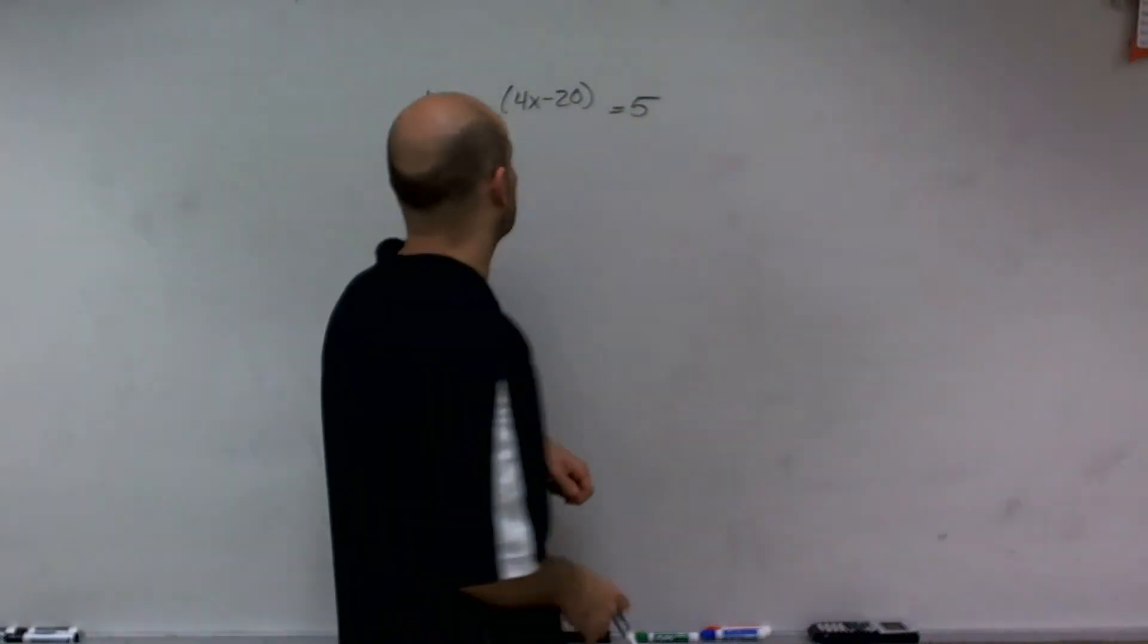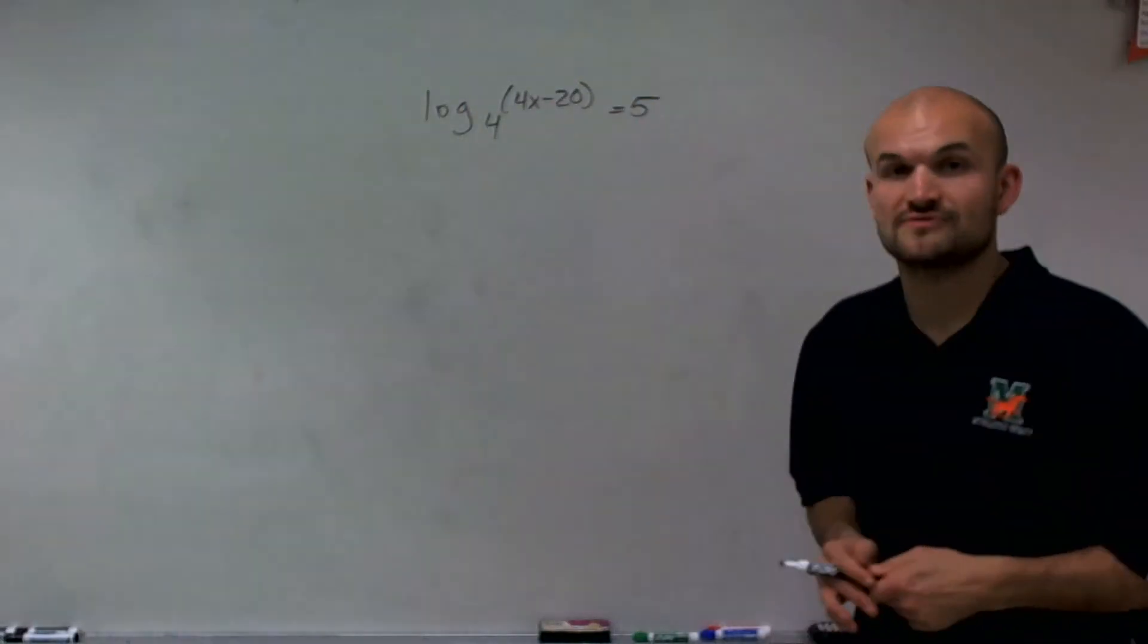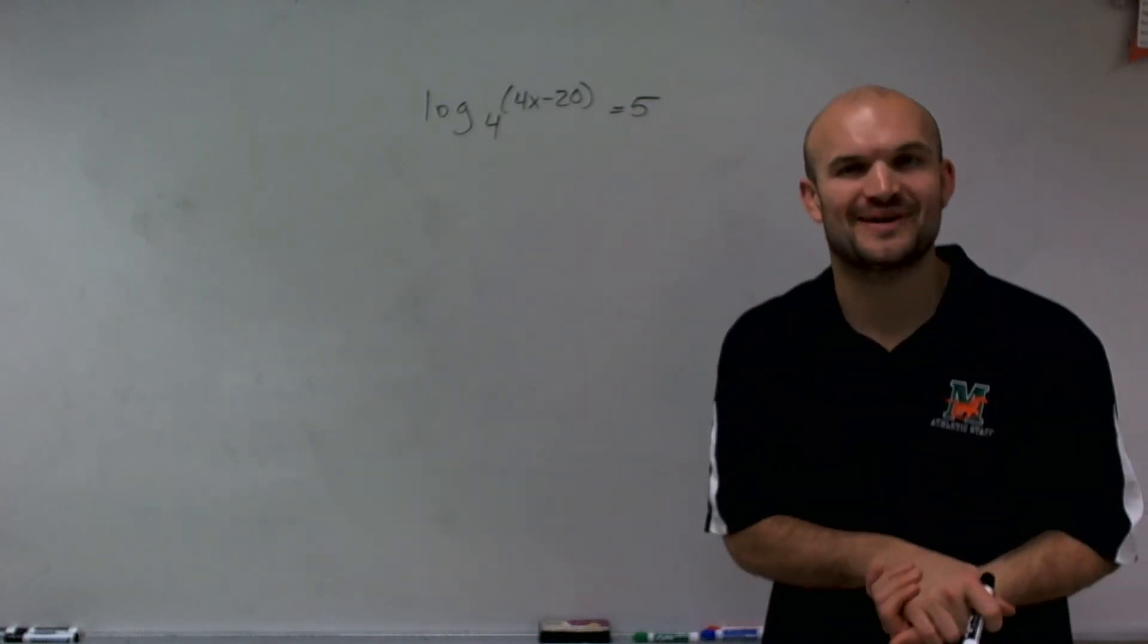Welcome. So what I have is log base 4 of 4x minus 20 equals 5. And what we want to do is solve for our value of x.